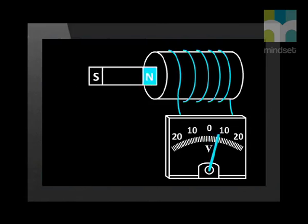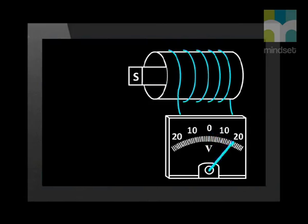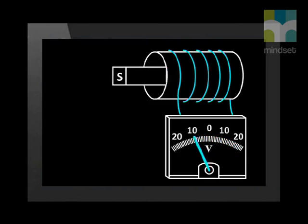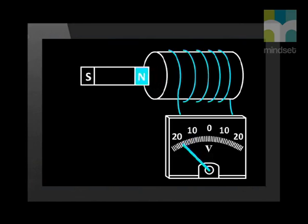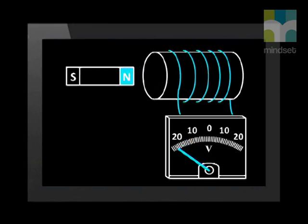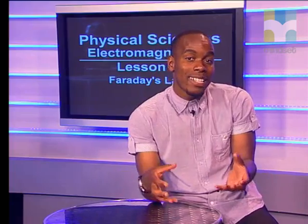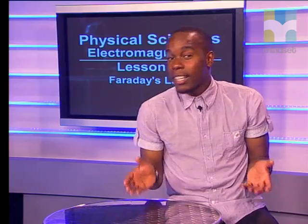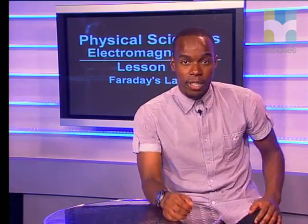As the magnet moves into the solenoid, a potential difference is measured on the voltmeter. When the magnet is pulled out again, a potential difference is measured in the opposite direction. Faraday's law describes how potential difference, or EMF, is created and how much is created. A change in magnetic field can induce EMF and a current.